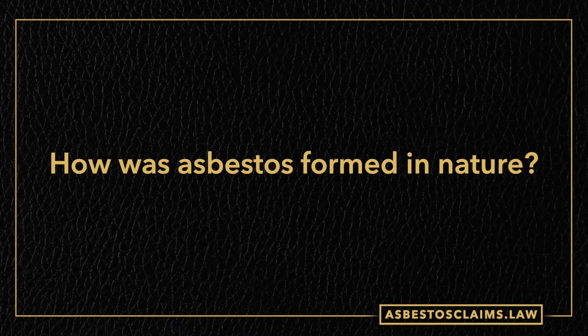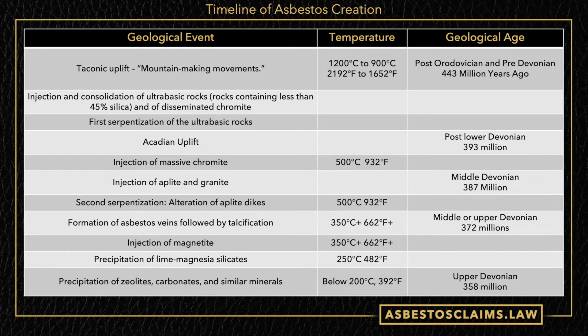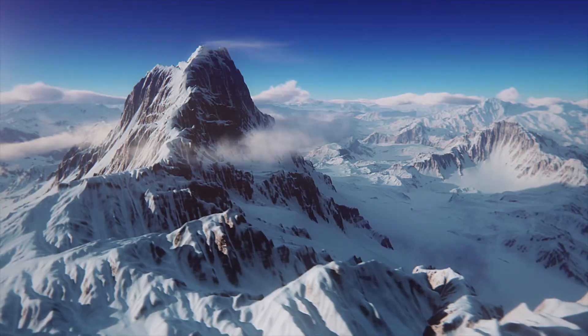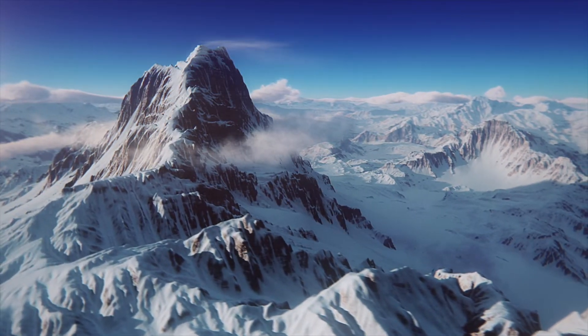How was asbestos formed in nature? Asbestos started forming an estimated 443 million years ago, at temperatures as high as 1200 degrees Celsius, which is about 2200 Fahrenheit. It happened during what they call the Taconic uplift — that's when mountains were made. So the mountain ranges we all know today were forming around the same time asbestos was beginning to be made.